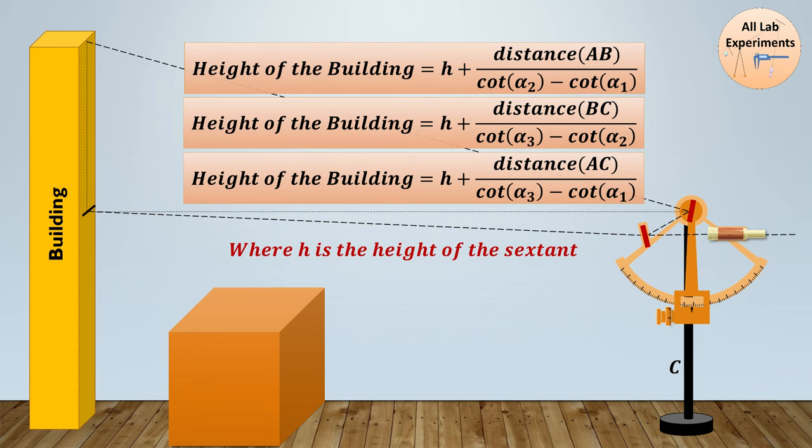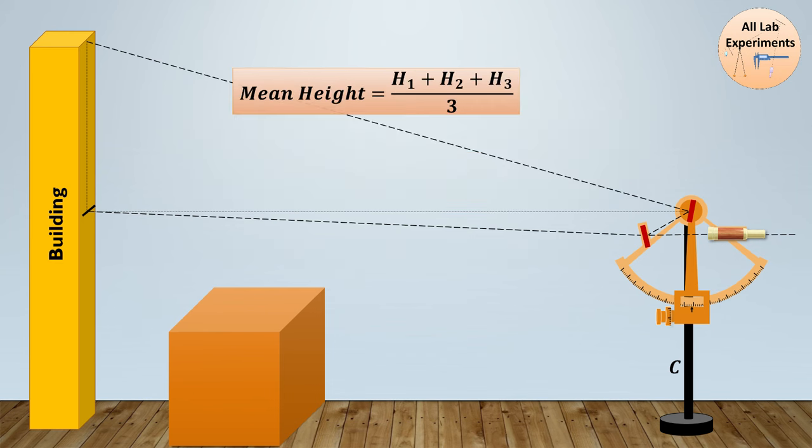In addition to that, overall we can make three combinations of this. First using A-B distance and alpha 2 and alpha 1 as angles, in the second case B-C distance and alpha 3 and alpha 2 as their respective angles, and in the third case we can use the distance between A-C points and alpha 3 and alpha 1 as their respective angles. So in this way we are going to calculate three heights, and finally for getting an accurate value we can take a mean of them.